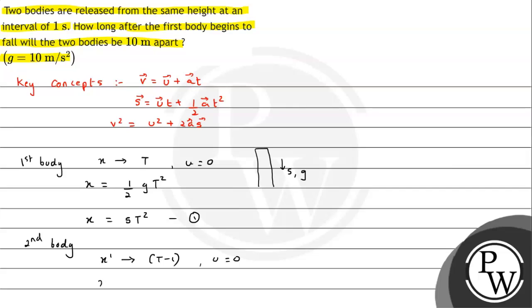So from this situation we can write X dash will be equals to half of g into T minus one the whole square. So from this situation this will be 5 times T minus one squared.